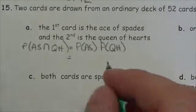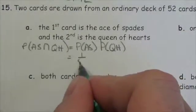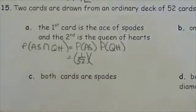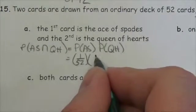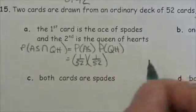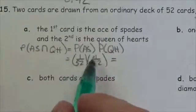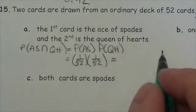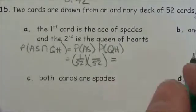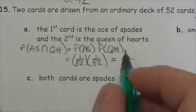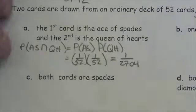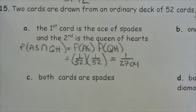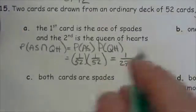There is only one ace of spades out of 52 cards, and there is only one queen of hearts out of 52 cards. Because we put the card back, we're right back up to 52 cards. One times one is just one, and 52 times 52 is 2704, so there's only a 1 out of 2704 probability of getting the ace of spades first and then the queen of hearts.